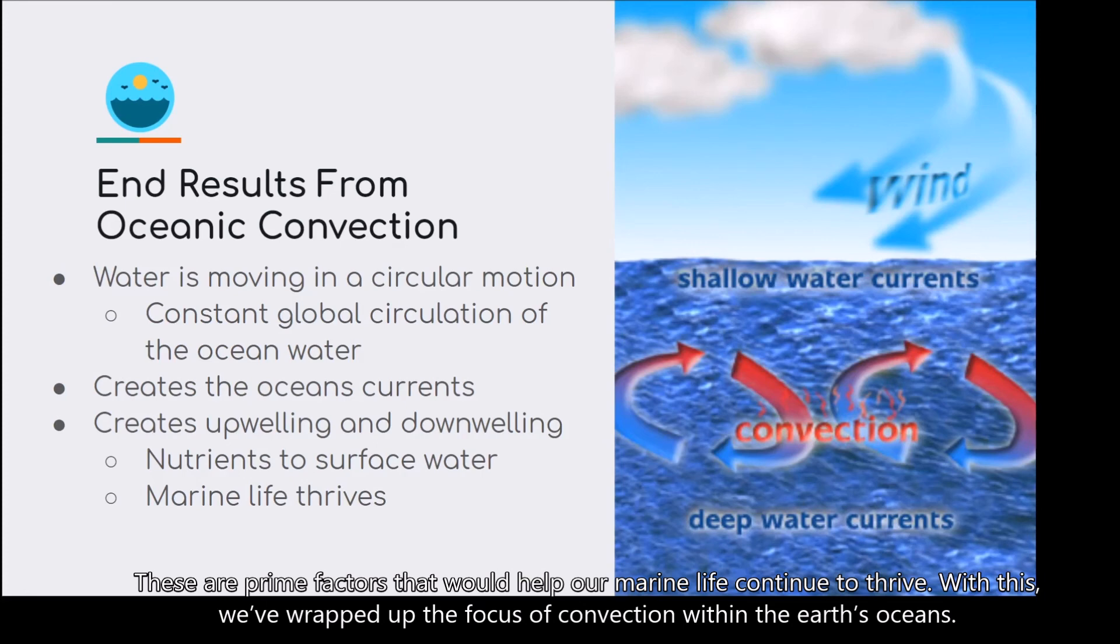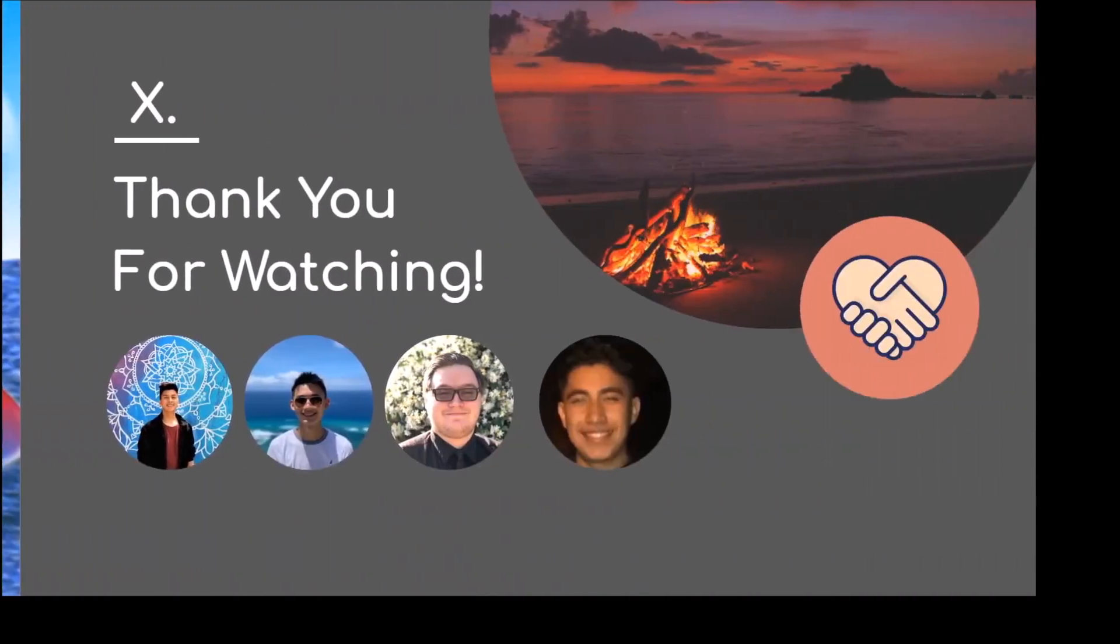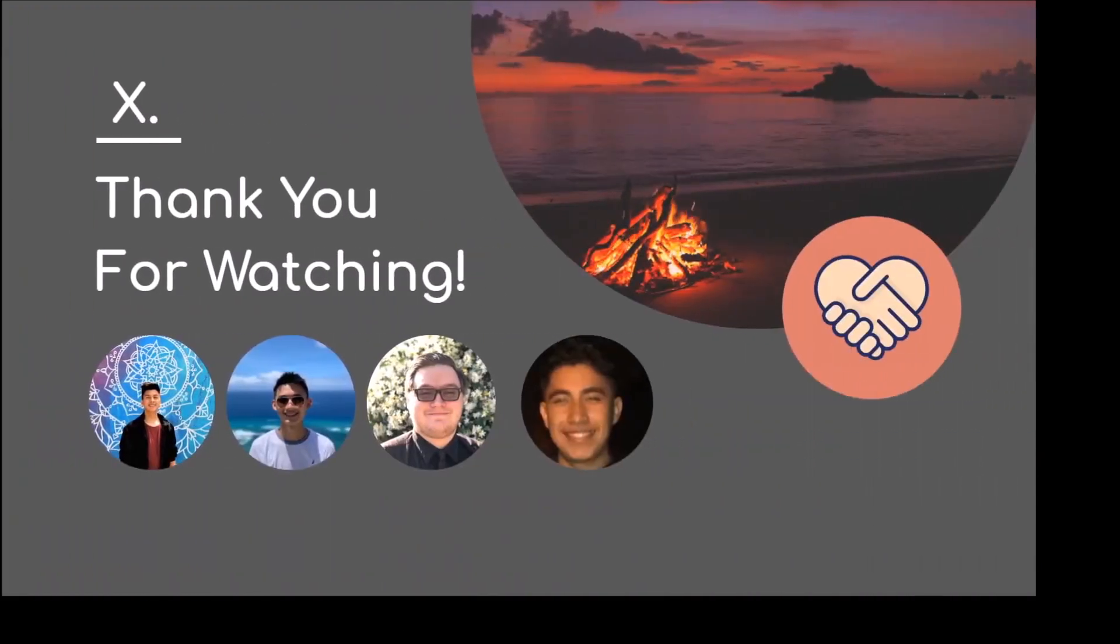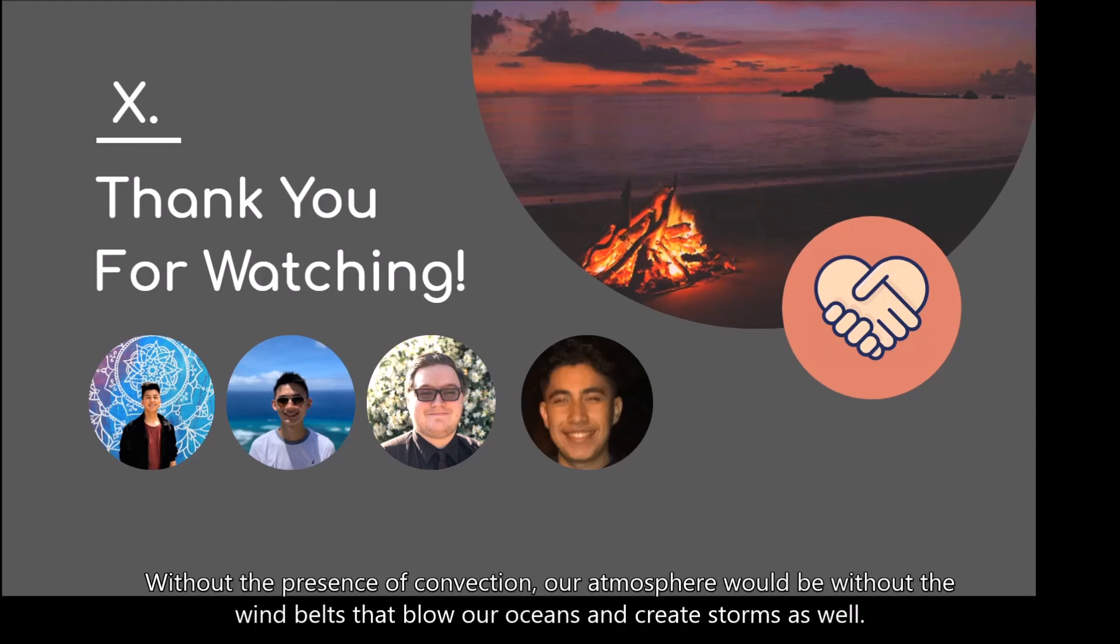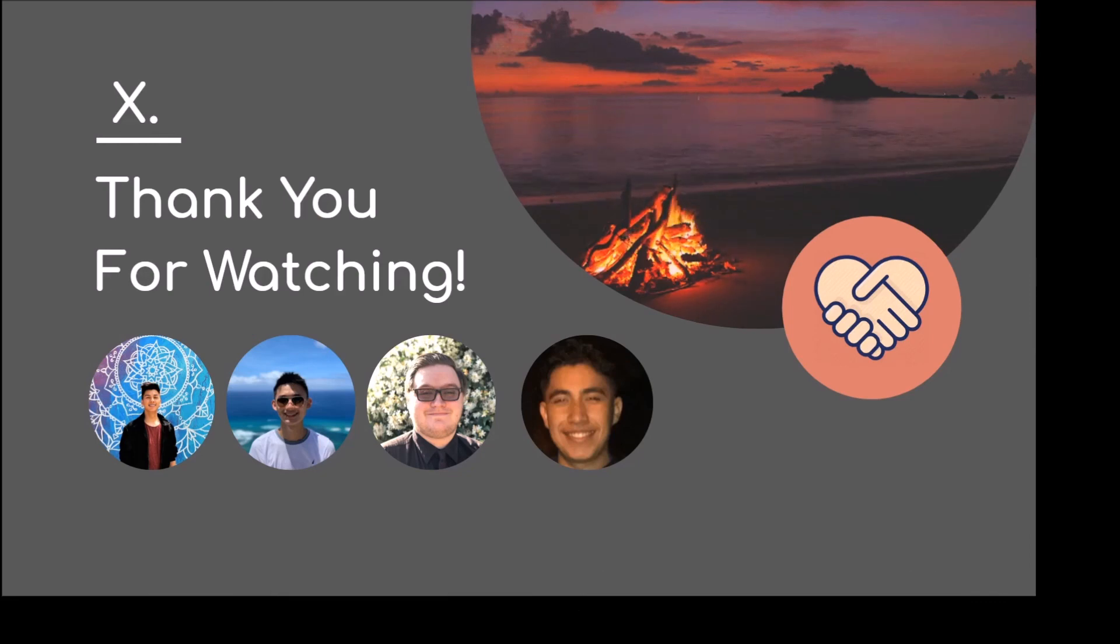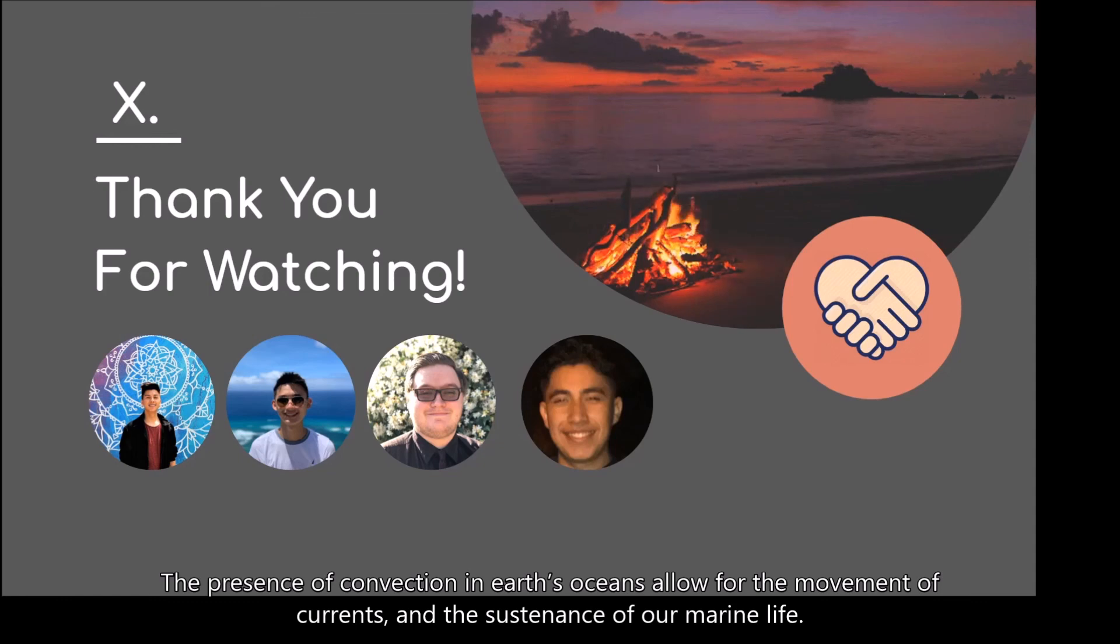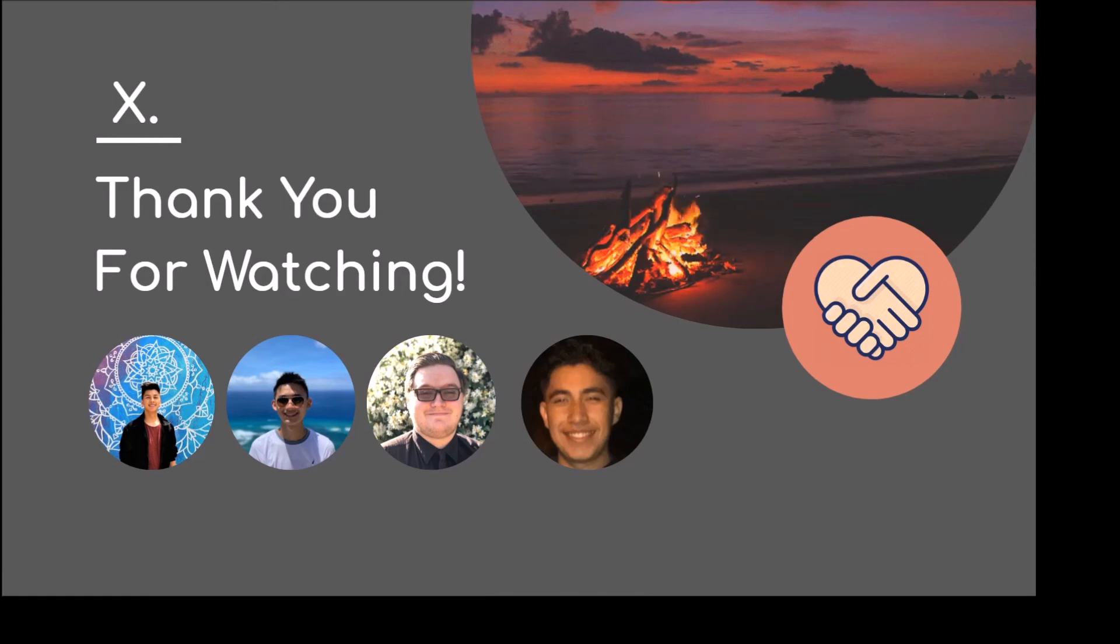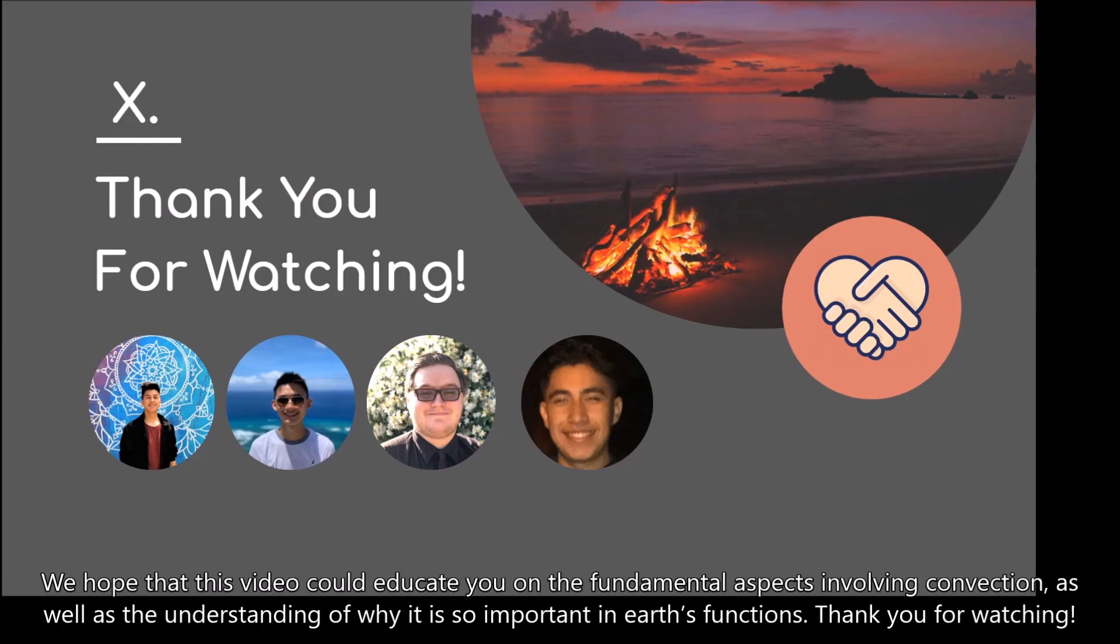With this, we've wrapped up the focus of convection within the Earth's oceans. All these aspects of convection are present in the world we live in. Without the presence of convection, our atmosphere would be without the wind belts that blow our oceans and create storms as well. The presence of convection in Earth's oceans allow for the movement of current and the sustenance of our marine life. We hope that this video could educate you on the fundamental aspects involving convection, as well as the understanding of why it's so important in Earth's functions. Thank you for watching.